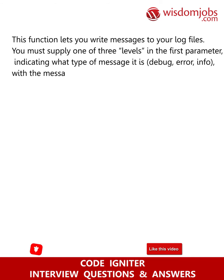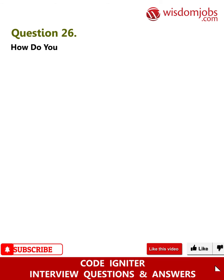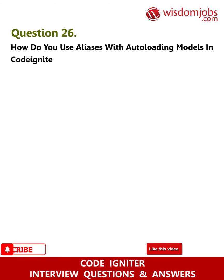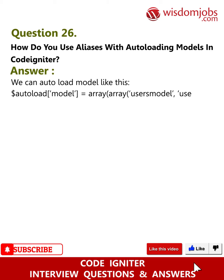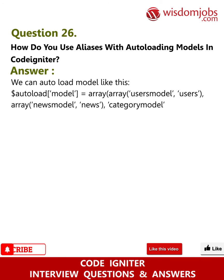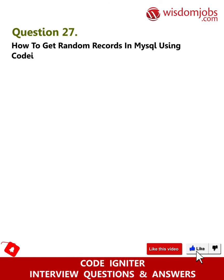Question 26: How do you use aliases with auto-loading models in CodeIgniter? Answer: We can auto-load models like this: $autoload['model'] = array(array('users_model', 'users'), array('news_model', 'news'), 'category_model').